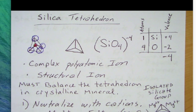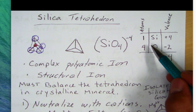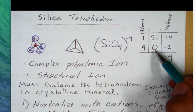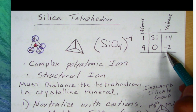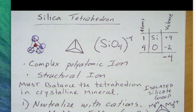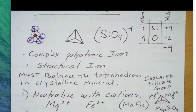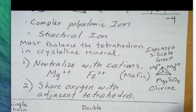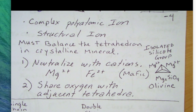I want to point out that we have only one silicon with a valence or charge of plus four, and four oxygen each with a negative two charge. That makes negative eight total. So when I do the math, I get a negative four. This complex ion has a negative four charge. In minerals and in nature, nature seeks equilibrium, so we need to balance this. We're going to balance it in one of two ways: either neutralize it with positive ions — called cations — or share oxygen with adjacent tetrahedra.